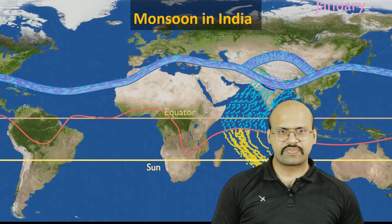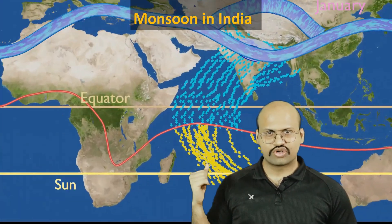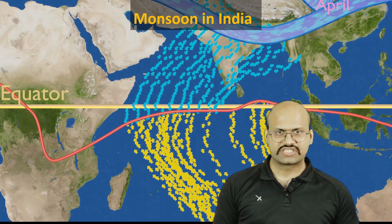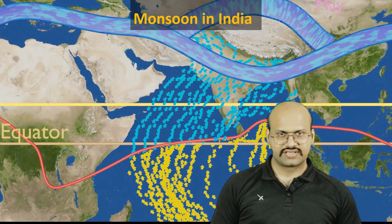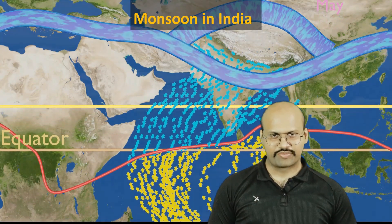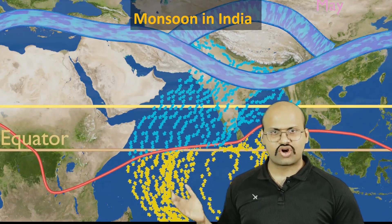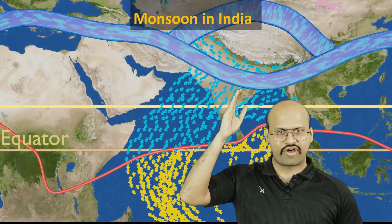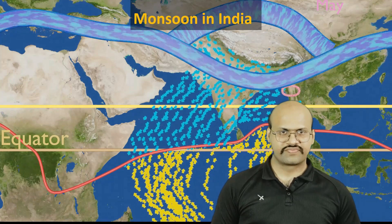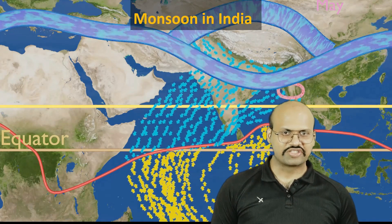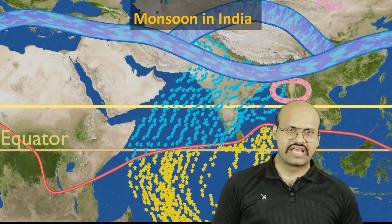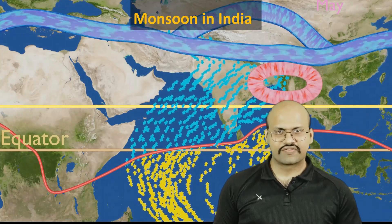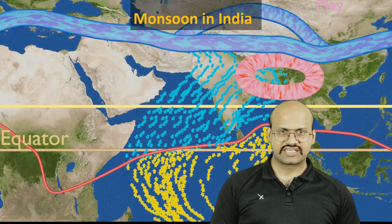Jet streams play a very important role in bringing monsoon to India. In winter, jet streams move south of the Himalayas, creating a high pressure region over the Indian subcontinent that prevents monsoon winds from entering. Air flows from the Himalayas towards the Indian Ocean. In May, anticyclones form starting from the Bay of Bengal and slowly move towards the Himalayan region, disrupting the jet stream flow south of the Himalayas.